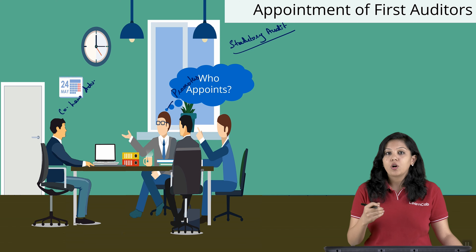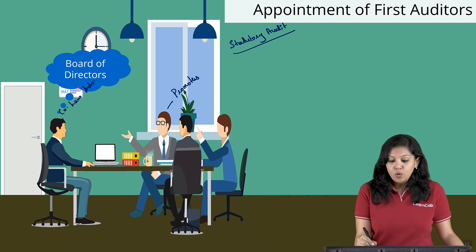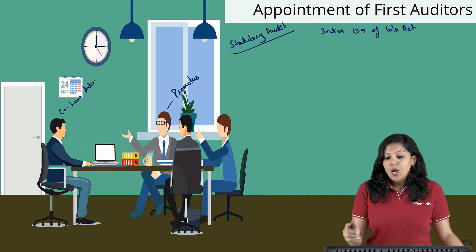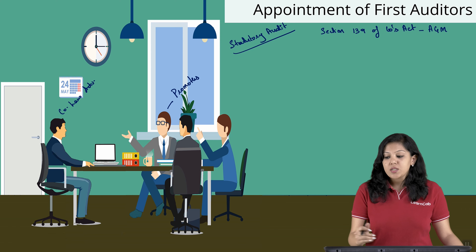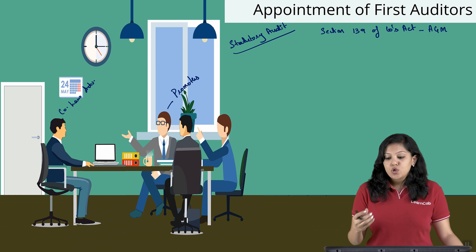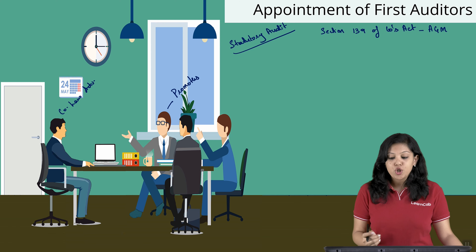The first question from the promoters: who appoints the first auditor or first statutory auditor? The company law advisor says it is the Board of Directors. However, as per Section 139 of Companies Act 2013, statutory auditors are appointed at the Annual General Meeting. So what does it mean when the company law advisor says it is appointed by the Board of Directors? To understand this, we need to look at the distribution of powers to manage a company.